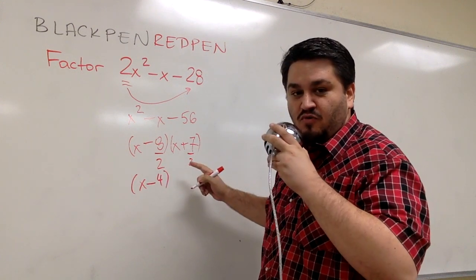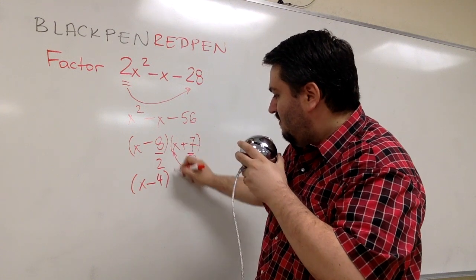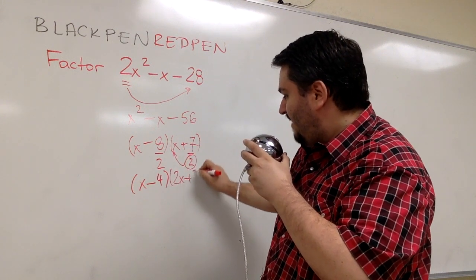If you get something like 7 over 2, as simplified as possible, right? Take the denominator, slide it to the front. 2x plus 7.